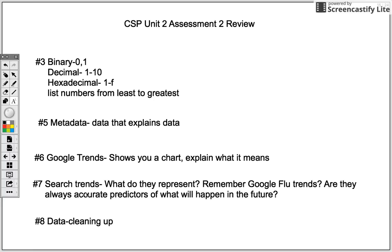Number seven is about search trends — what do they represent? It's the same thing as number six. Remember Google Flu Trends? So are they always accurate predictors of what will happen in the future? We talked about how they predicted things but were not really accurate. They do predict things; however, are they always accurate or are they imperfect predictors? And does it represent society as a whole? Because remember, there are some people who don't have access to the internet.